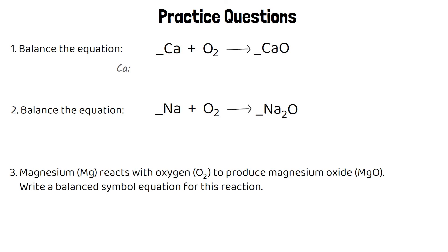For the first one, we have one atom of calcium in the reactants and one atom in the products, so that's already balanced. For the oxygens, we have two atoms in the reactants but only one in the products. This is unbalanced, so we're going to need to have two molecules of calcium oxide in the products. That's going to knock our calciums out of balance even though it's fixed the oxygens — I now have two atoms of calcium in the products and only one in the reactants. So I'm going to add a number two in front of the calcium in the reactants, giving two atoms of calcium in both reactants and products. This is now balanced.